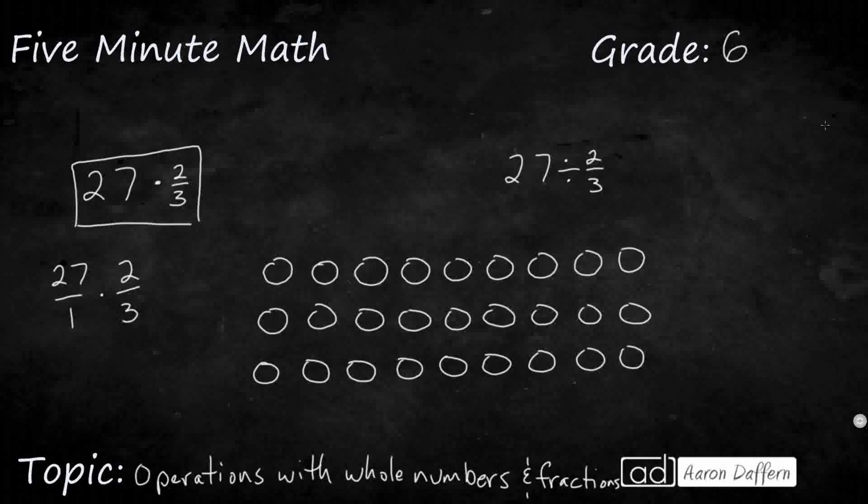So twenty-seven over one times two over three. And really what you're doing is you are taking that twenty-seven, and you're just taking a fraction of it. So it's going to be less than a whole, because you're multiplying it by something that's less than one, so it's going to be less than twenty-seven. So let's see what that's going to be.